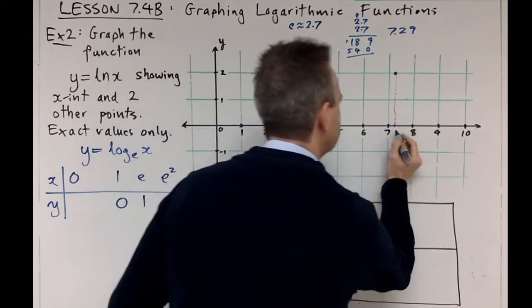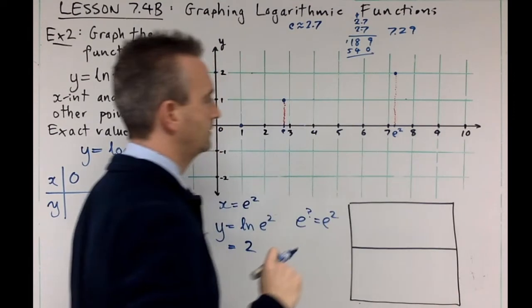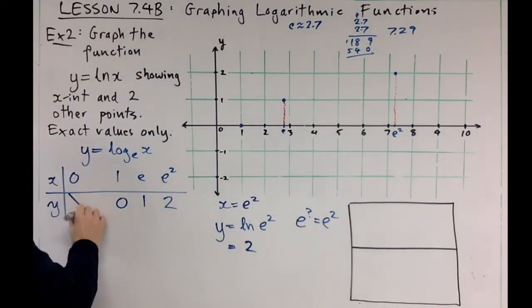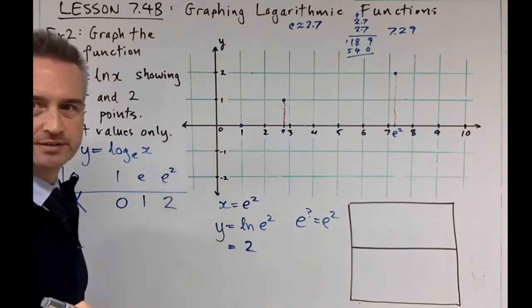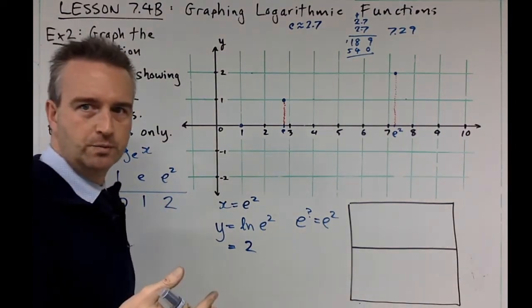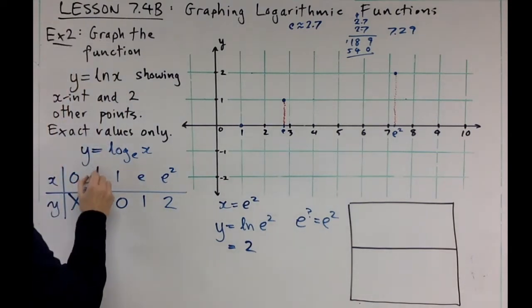That's about e squared. What else can we do? We've got one, two, three. Zero is not going to work. You can try that yourself. What if I want to go between zero and one? Remember we did a half before. What would we do this time? We would do one over e.